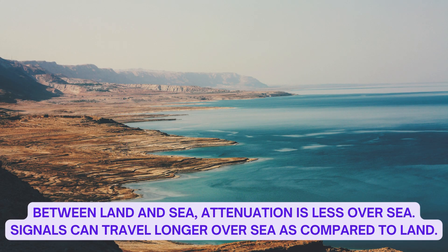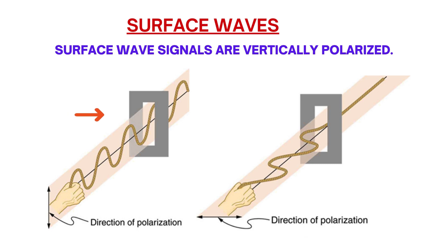Between land and sea, attenuation is less over sea, so signals can travel longer over sea compared to land. If the signal is vertically polarized — that is, the electric field is vertical — there is less attenuation. So surface wave signals are vertically polarized.